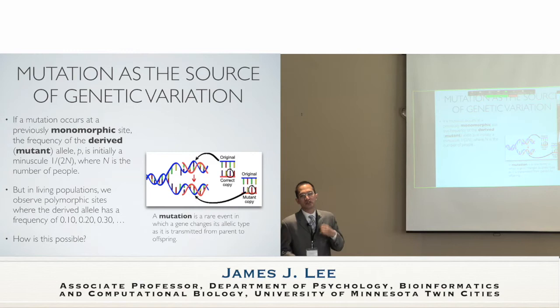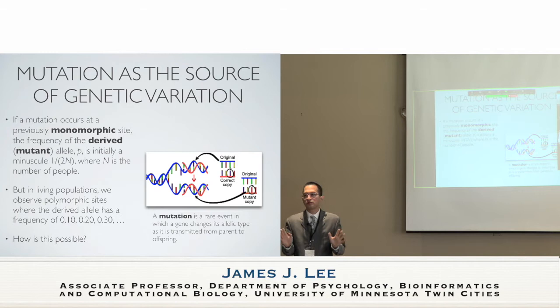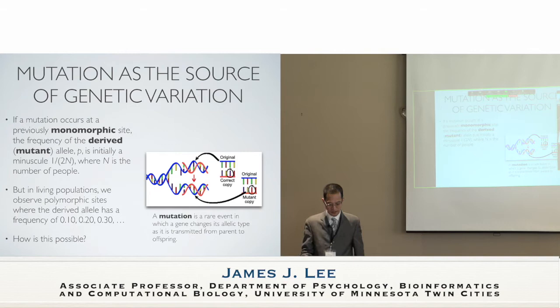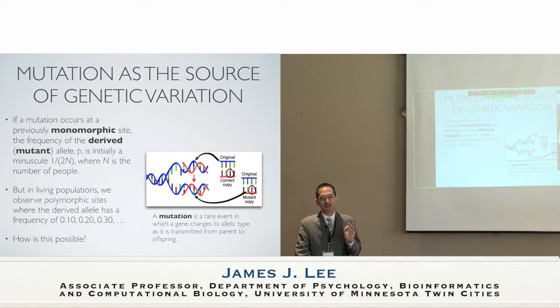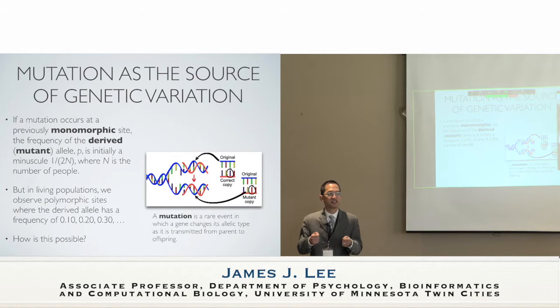Once a new mutation occurs - de novo, meaning it's carried by an individual but not present in its parents - suppose no one in our population actually carries that allele. The frequency of this mutant allele, which we call the derived allele as opposed to the ancestral allele, and often abbreviate as p, must be 1 over 2N, where N is the number of people in this population. It's 2N because each of us carries two genes at each site in the genome - one from mom, one from dad. So once a new mutation happens, its frequency must be 1 over 2N.